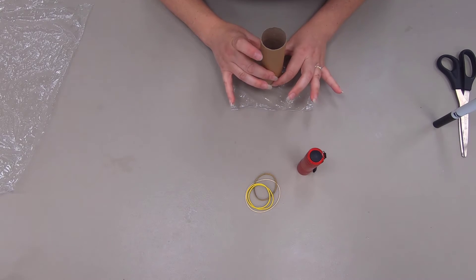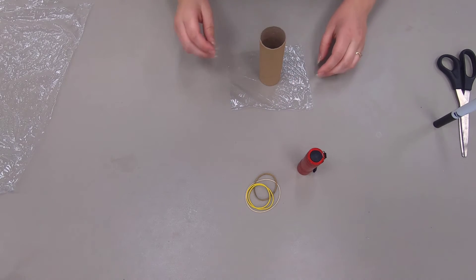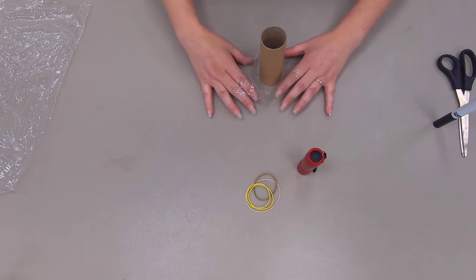The next step you're going to want to put this right over your design so it's in the center part of the toilet paper roll and you're going to pull this up.